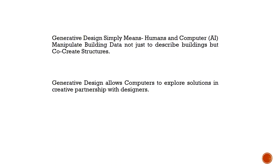Humans and computer AI — artificial intelligence — work together with building data. Building information modeling is a process. The data is manipulated not just to describe the building, but to create it. This forms the concept of design.